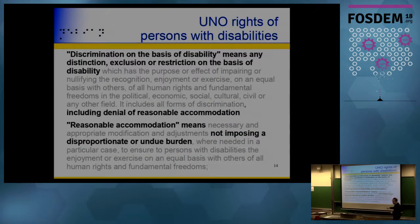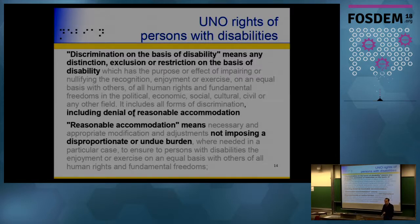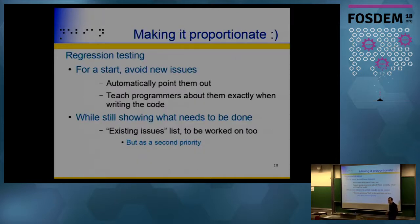On the legal side, the UN Convention on the Rights of Persons with Disabilities defines discrimination as exclusion on the basis of disability, including denial of reasonable accommodation — even if unintentional. 'Reasonable' means not imposing a disproportionate or undue burden. It has a legal meaning, and the question is how to make accessibility proportionate.